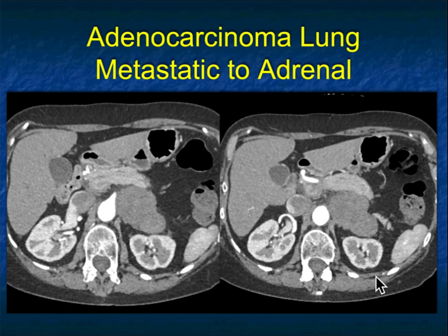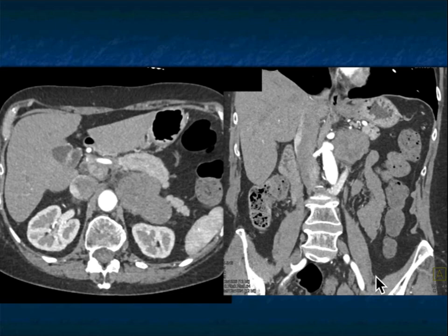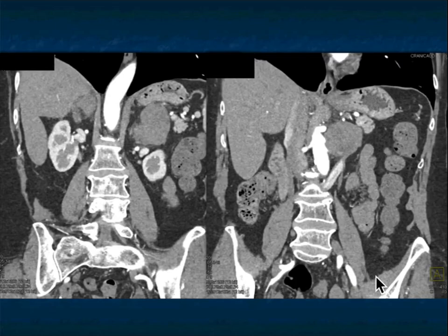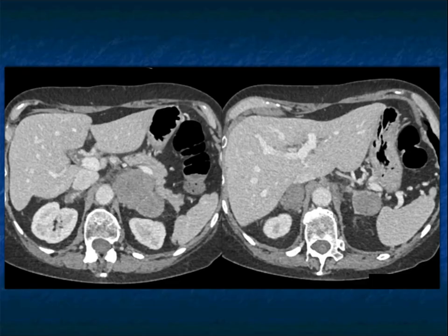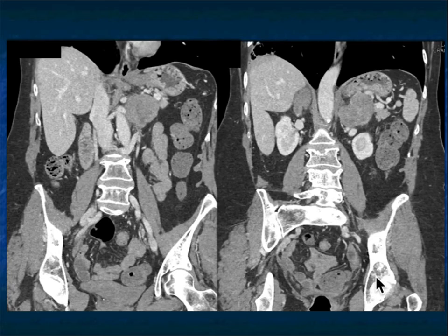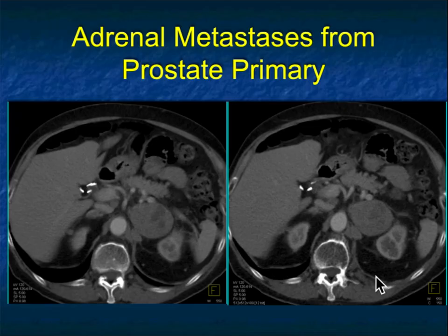Another example: lung cancer adenocarcinoma metastatic to the left adrenal gland — a large solid mass, very nicely seen abutting the aorta. Here it is on the coronal perspective. Another example of bilateral lesions, right and left, with the left being larger. It's typical for one to be larger than the other. With hypovascular lesions, picking a primary is difficult.